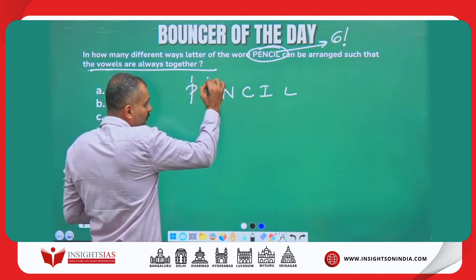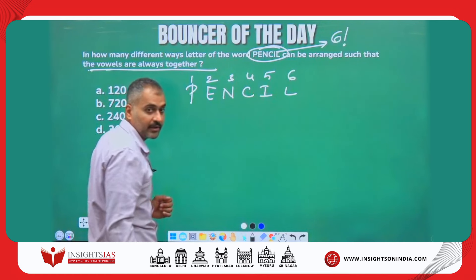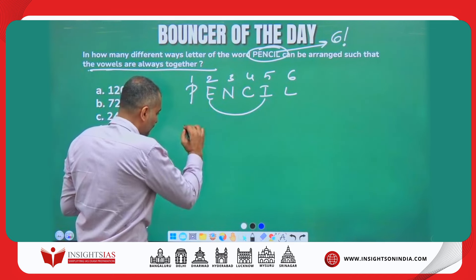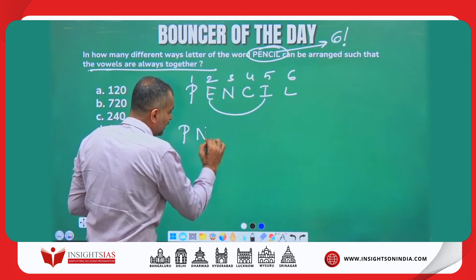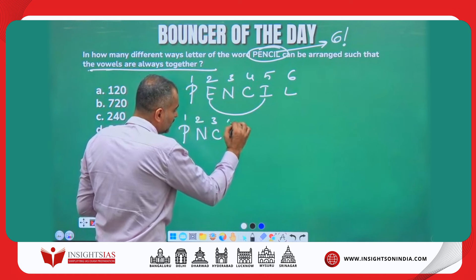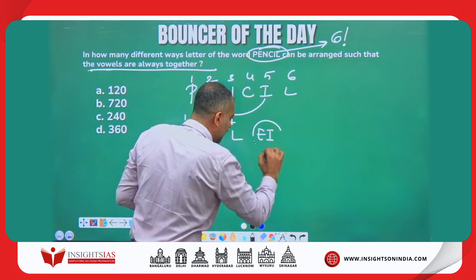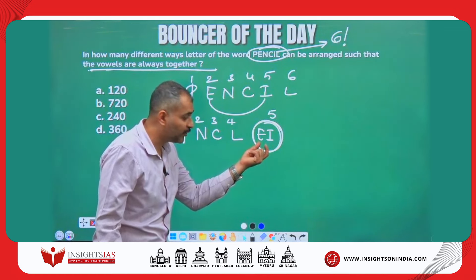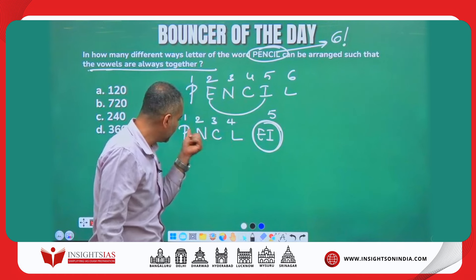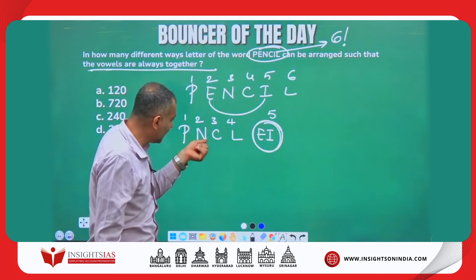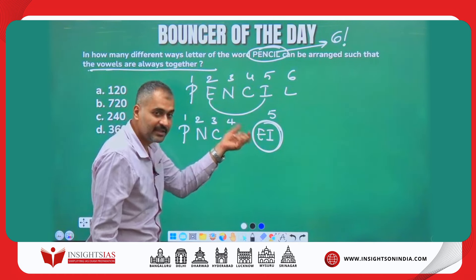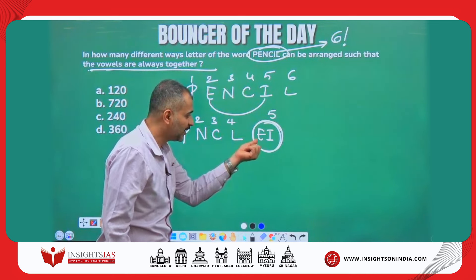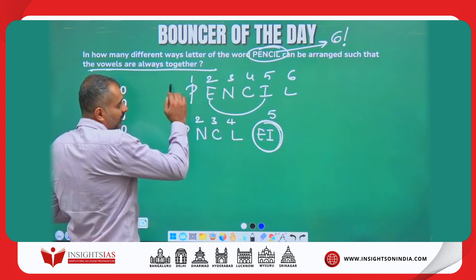I will write all the characters of PENCIL: P, N, C, L, E, I — that is 1, 2, 3, 4, 5, 6 characters. Since E and I must always be together, I will take P, N, C, L as 4 characters and tie E and I together, considering them as one single character. So wherever they go, E and I go together.